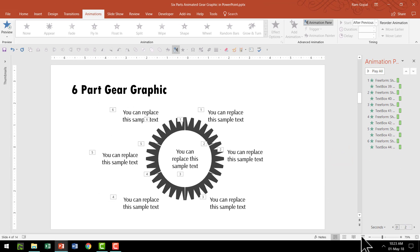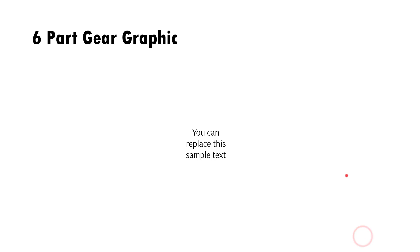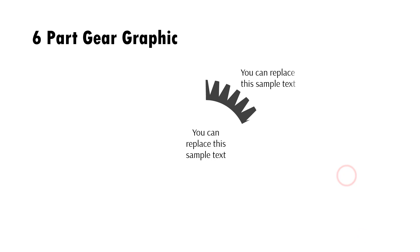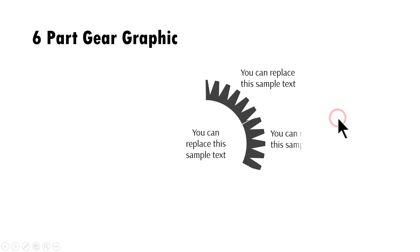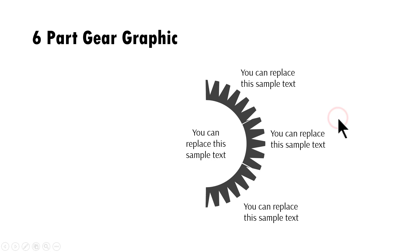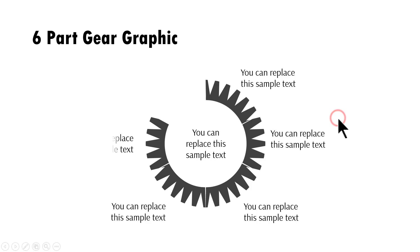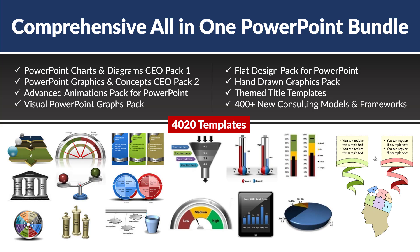Now let us go to slideshow mode and see how this works. On a click, the first part and associated label comes in, then the second part of the gear, then the third part with its label, fourth part, fifth part, and sixth part.